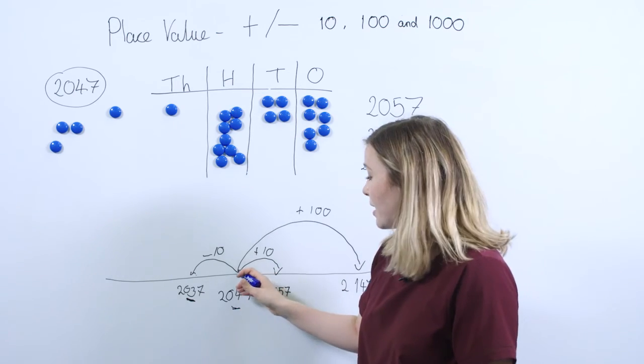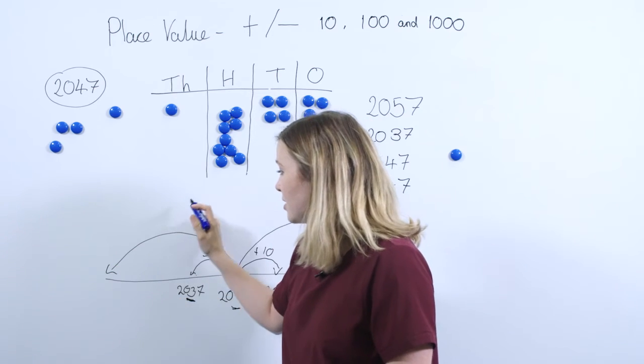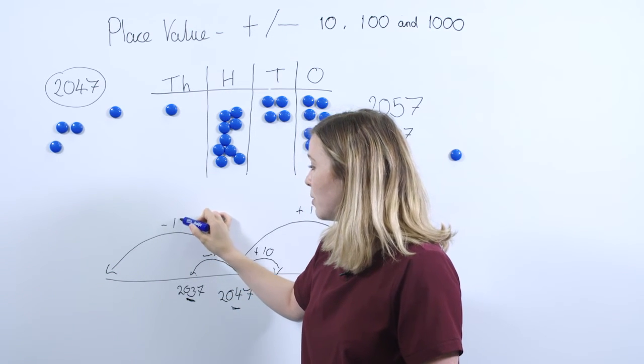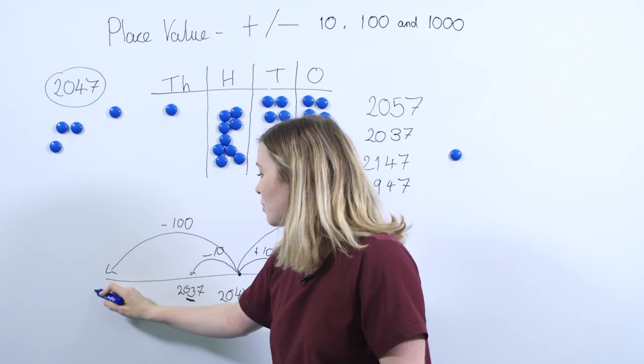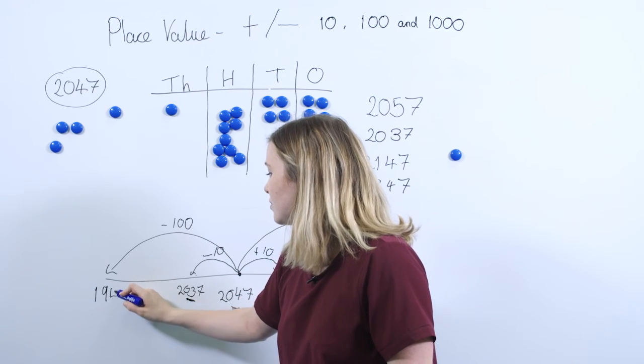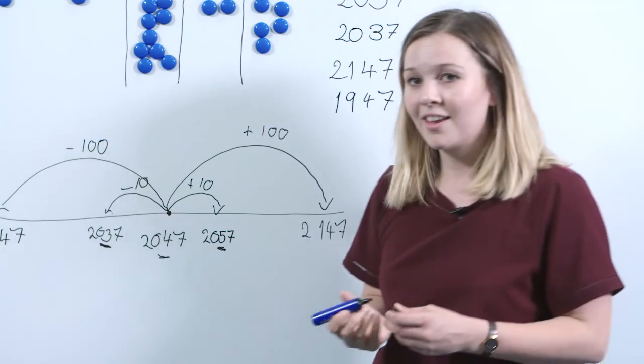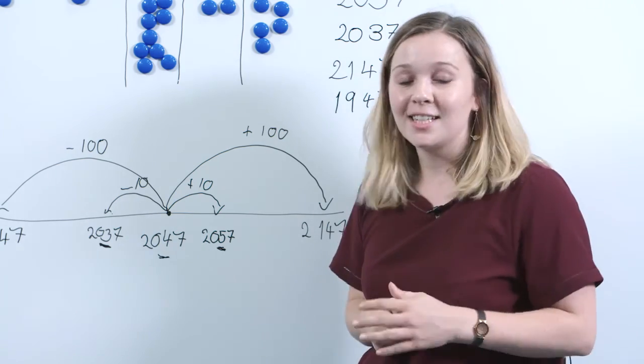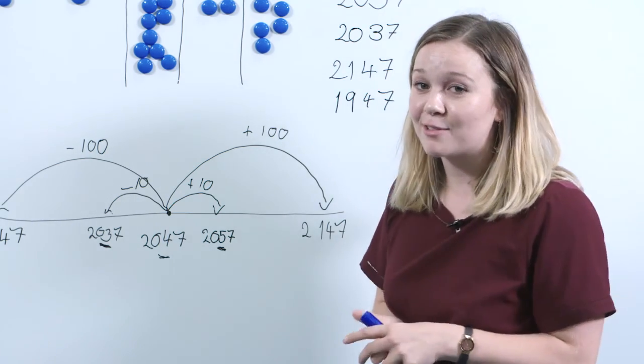And the final thing we'll do is just count back a hundred to represent this on our number line. So taking away 100 will give us 1947. And that's what you can do to practice adding and subtracting tens, hundreds, and thousands with your pupils.